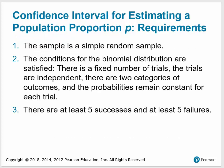There are several requirements that must be met. One is that the sample is a simple random sample. The second is that the conditions of a binomial distribution are satisfied: there's a fixed number of trials, the trials are independent, there are two categories of outcomes, and the probabilities remain constant for each trial. The last requirement is that there are at least five successes and five failures.